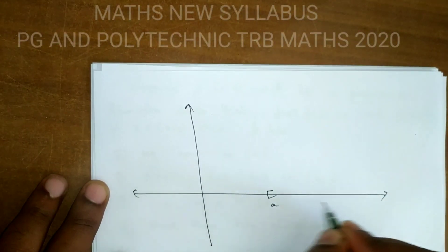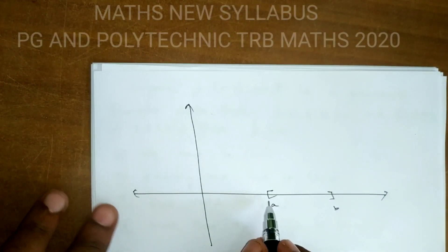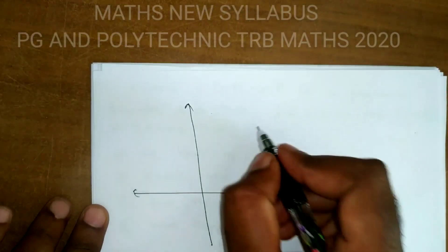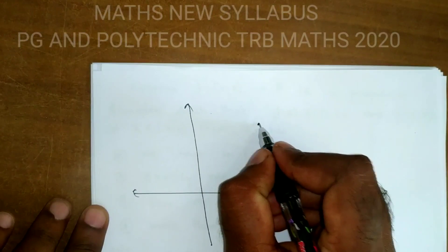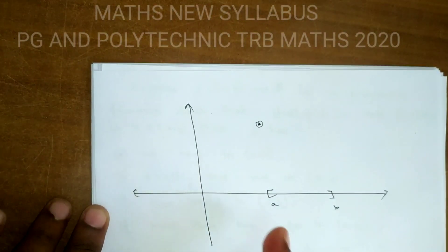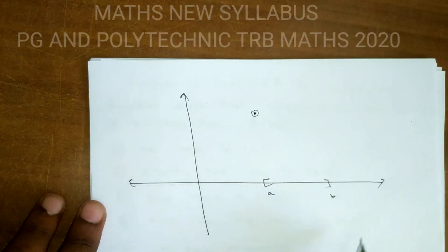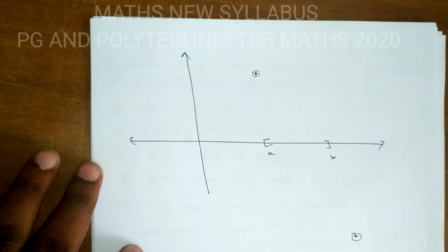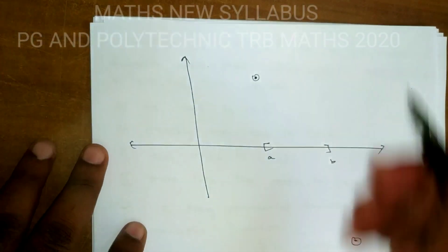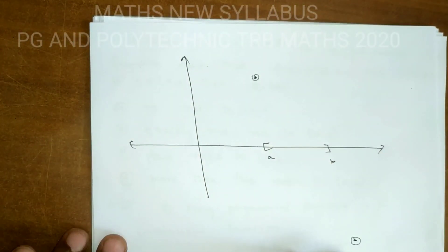Consider the closed interval [a, b]. Suppose f(a) > 0 somewhere and f(b) < 0 somewhere. Since f is continuous, let us look at Case 1: suppose f is strictly increasing. Case 2: suppose f is strictly decreasing.